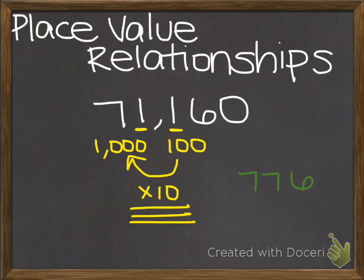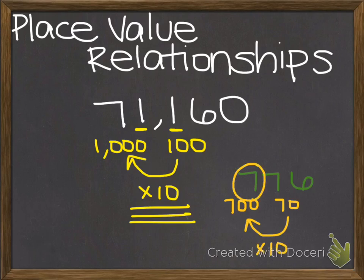In this number, the seven in the tens place has a value of seventy. The seven in the hundreds place has a value of seven hundred. So we can say that the seven in the hundreds place is ten times the value of the seven in the tens place. This is just demonstrating the relationship in our base ten number system.